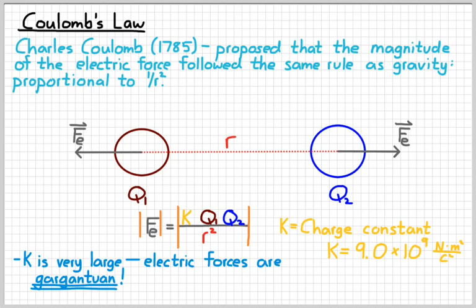Last thing to do here is I'm going to enclose everything in absolute value brackets. Coulomb's law only tells us the magnitude of an electric force. It does not tell us the direction. Our rules that opposites attract and likes repel tell us the direction.